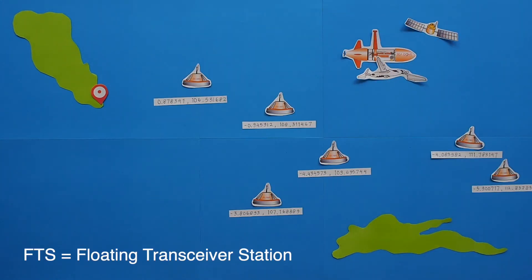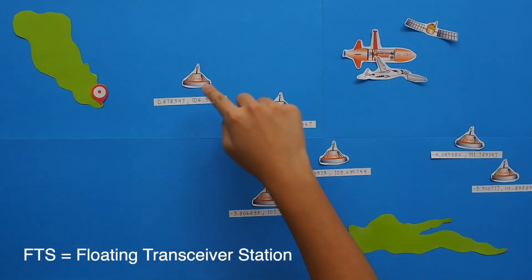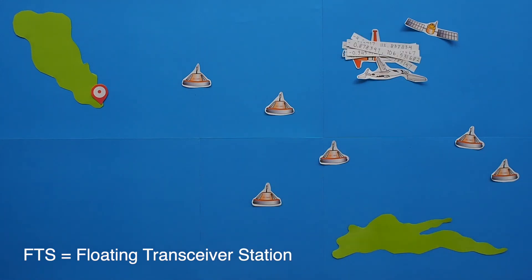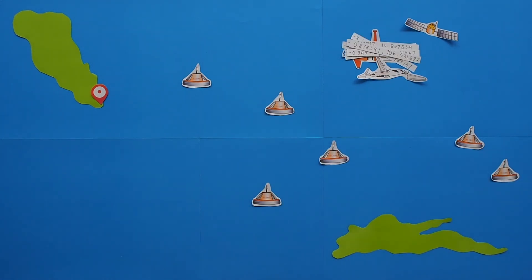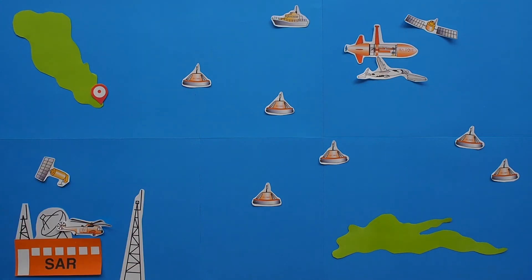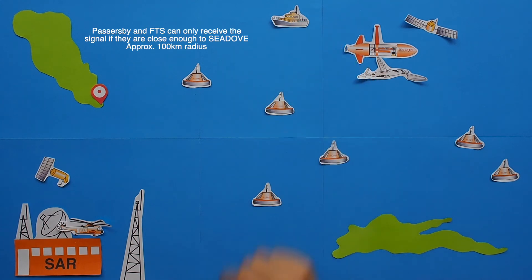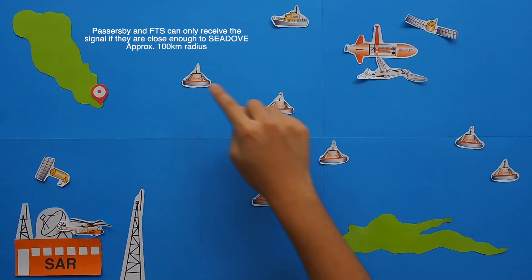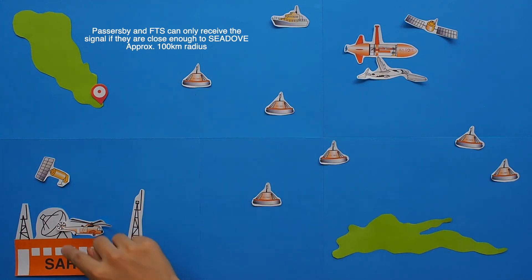There's also another device that I call FTS, which will be located in strategic spots in the ocean. All the FTS's locations are already stored in C-DOF's memory, so it knows where all the FTS's are. Directly after the impact, C-DOF will send the crash location and SOS distress signal, which can be received by passing ships, but it is mainly to be transmitted to the FTS, so it can be relayed and received by the Rescue Coordination Center.